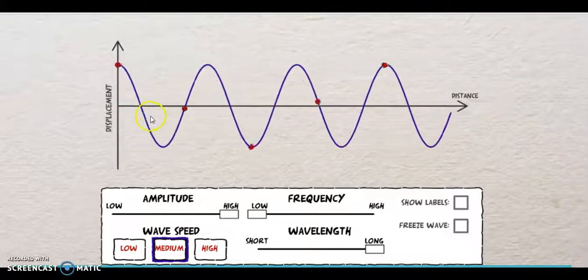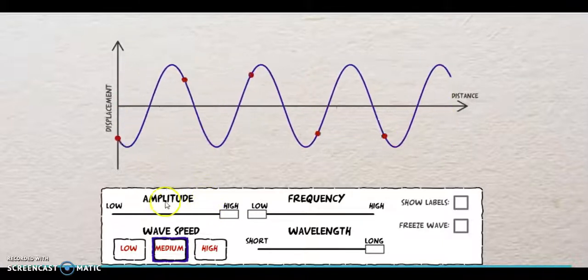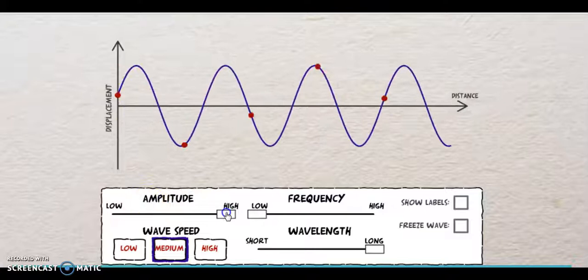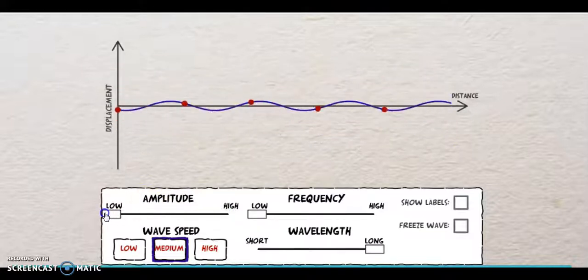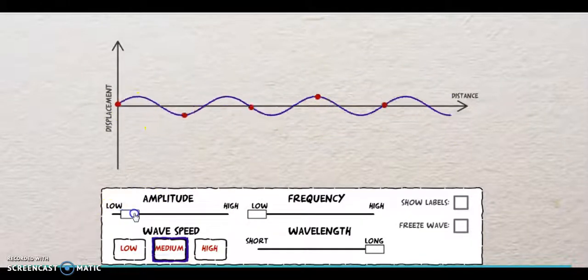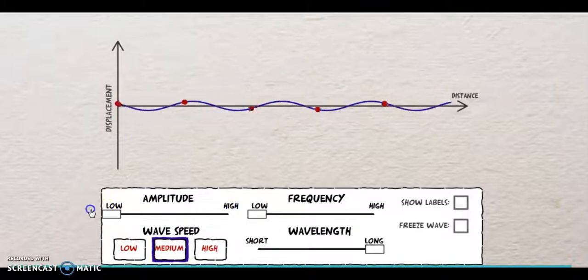Okay, so we're just going to change a couple of things here. So what is this amplitude? Let's just see if I want to change this from high to low. Oh, see what happens to the wave? Low to high, high to low, low to high.